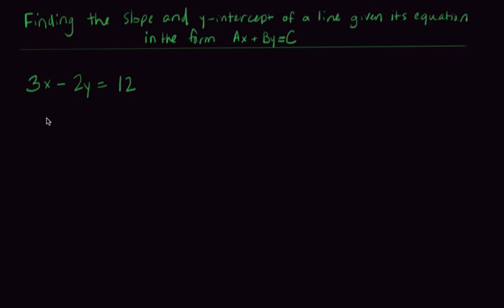So in order to find the slope and y-intercept, what you want to do first - I mean the easiest way to do this I think is to get it in the form y equals mx plus b.